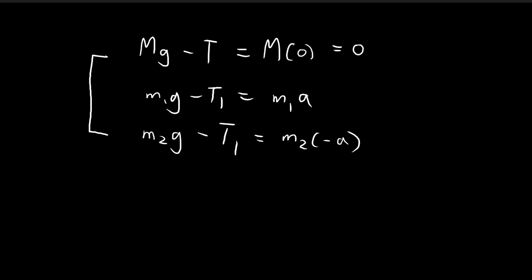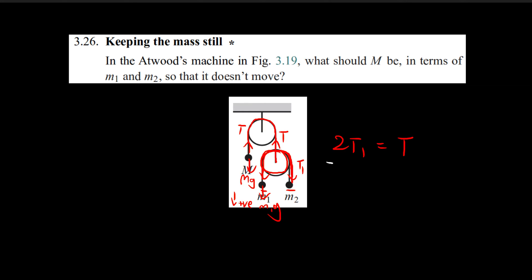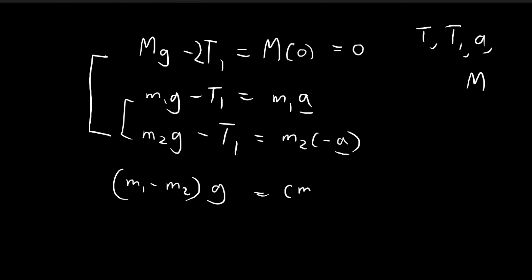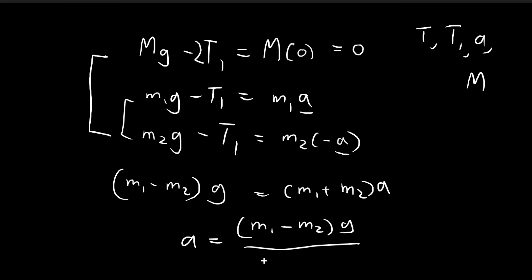Now we have this set of equations to solve. We have several unknowns: T, T1, a, and capital M. First, we can get rid of one of the T's by substituting T with 2T1. Then we try to eliminate the unknown a by considering the two equations for m1 and m2. If we subtract these two equations from each other, on the left-hand side we have (m1 minus m2)g, and on the right-hand side we have (m1 plus m2)a. So the acceleration a equals (m1 minus m2)g divided by (m1 plus m2).